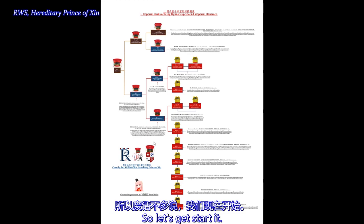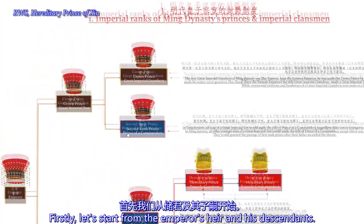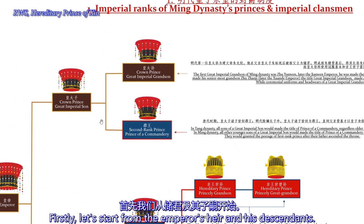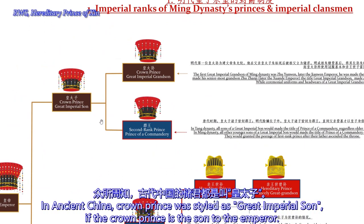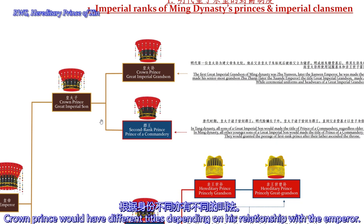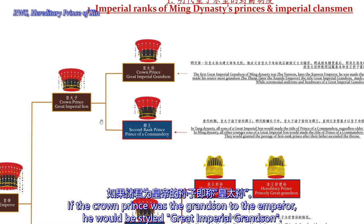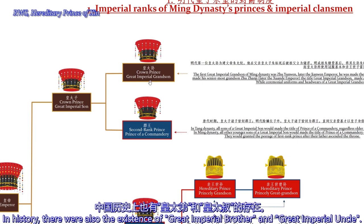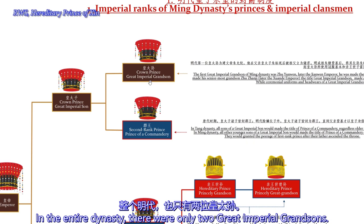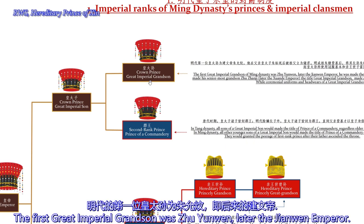So let's get started. Firstly, we start from the Emperor's heir and his descendants. In ancient China, the Crown Prince would style 'Great Imperial Son' if the Crown Prince was the son of the Emperor. The Crown Prince would have different styles depending on his relationship to the Emperor. If the Crown Prince was the grandson of the Emperor, he would style 'Great Imperial Grandson.' In history, there was also the existence of 'Great Imperial Brother' and 'Great Imperial Uncle.' In the entire dynasty, there were only two Great Imperial Grandsons. The first Great Imperial Grandson was Zhu Yunwen, later a reigning Emperor.